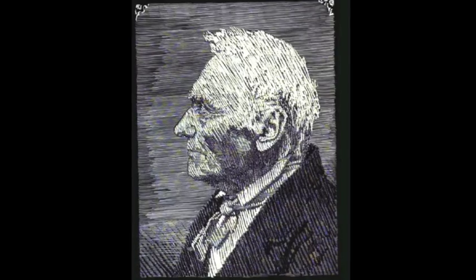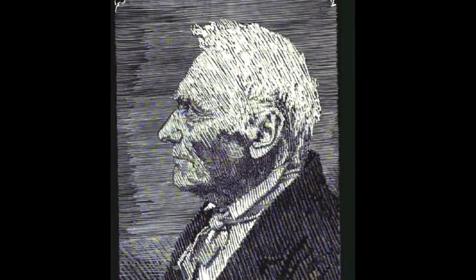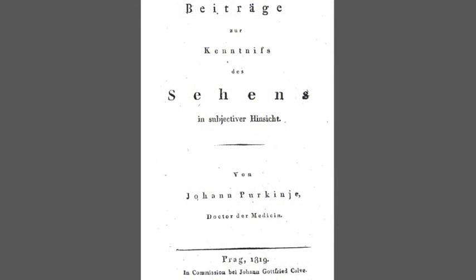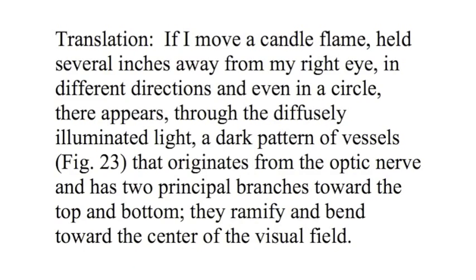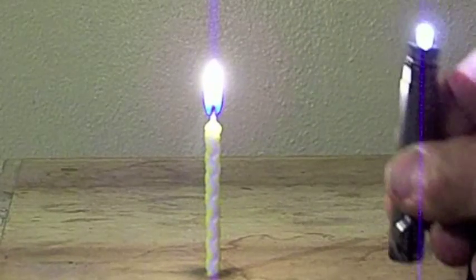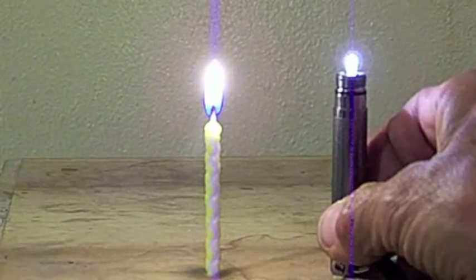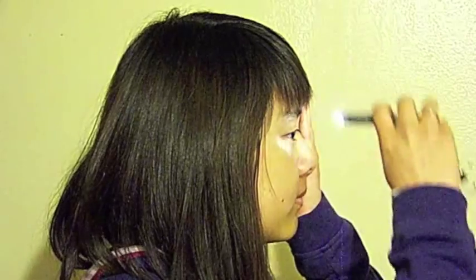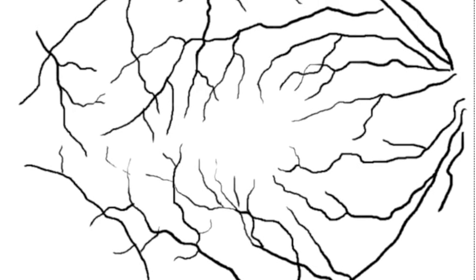In 1819, the Czech physician Johannes Purkinje described moving a candle in the peripheral view of his eye and seeing the shadows of the major blood vessels on the retina. In place of a candle, I suggest you use a triple-A mini Mag-Lite in candle mode. Do this in a dimly lit room facing a blank wall, hold a hand over one eye, and stare directly ahead with your other eye while moving the light in arcs or circles in your peripheral vision. You should see a branching figure which rapidly fades from view if you stop moving the light.